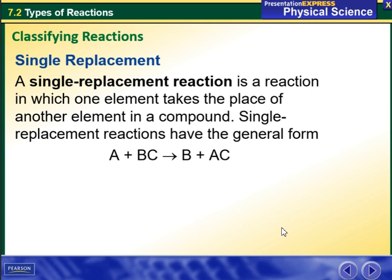A single replacement reaction is a reaction in which one element takes the place of another element in a compound. Single replacement reactions have the general form of A plus BC, where we have three elements, giving B plus AC.